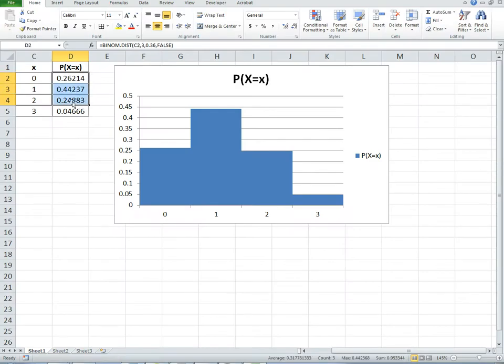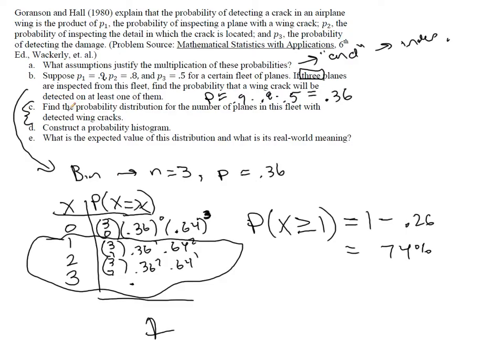Here's our probability distribution. It shows us that we're most likely to either catch 0, 1, or 2, not very likely that we catch all three planes, the cracks in all three planes. And hopefully that's not too dangerous of a thing. And hopefully in real life this would be a lot higher, that this 50% that if the wing is detected that damage is caught all the time.